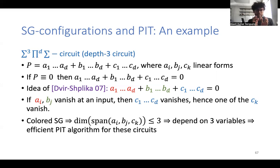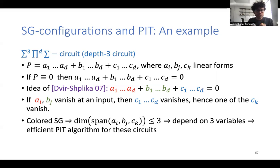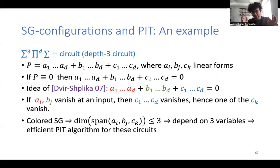So if the circuit computes the zero polynomial, its constituent linear forms form a colored Sylvester-Galai configuration. By the classical colored Sylvester-Galai theorem (Edelstein-Gallai), they depend on at most three variables, and we can use this fact to design efficient PIT algorithms. This is a toy example showing how Sylvester-Galai configurations are useful toward PIT algorithms: dimension bounds yield efficient deterministic algorithms.